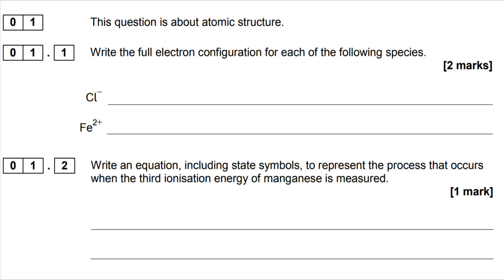Starting here with an atomic structure question, more specifically this is about electron configuration within ions. It's a place where people can often make fairly straightforward and careless errors. If we take a look first at chlorine, you'll notice that what I've done is written out the electron configuration for chlorine itself.